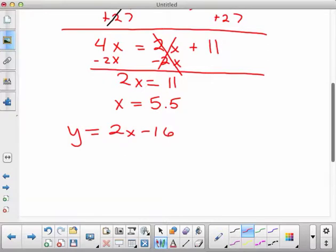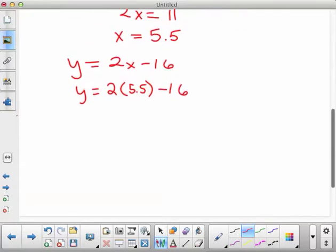And we're going to plug the 5.5 in. So y equals 2 times 5.5 minus 16, now that we know what it is. So it's all substituting variables. And so y is 2 times 5.5 would be 11 minus 16.